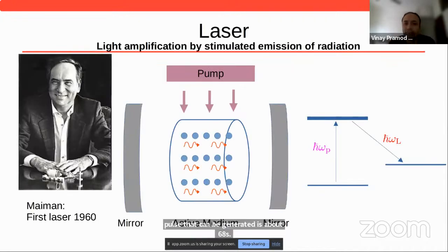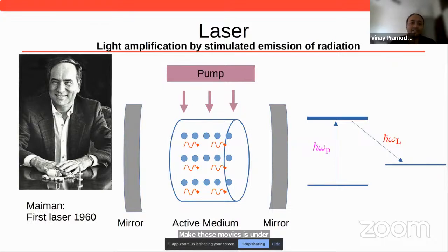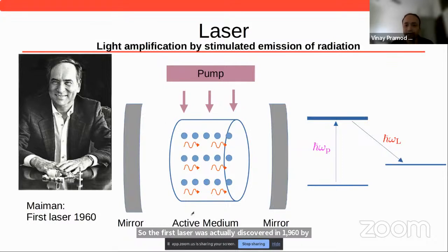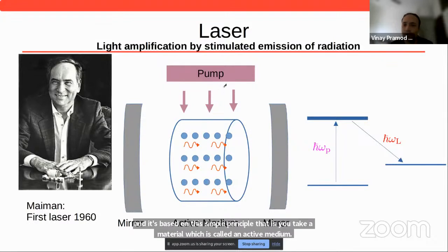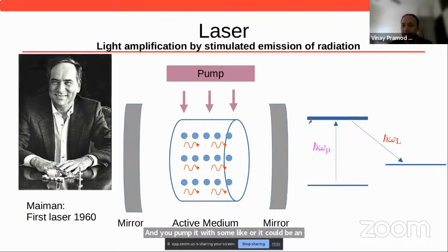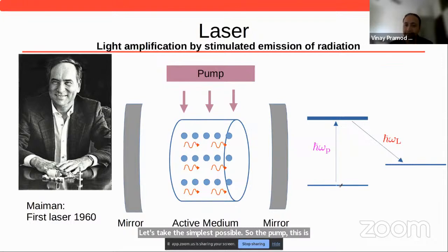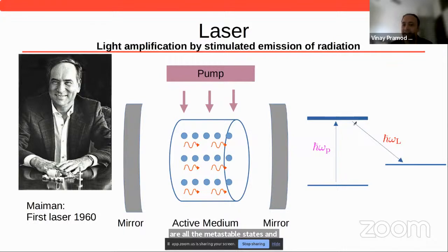Let's go back to basics. The first laser was discovered in 1960 by Maiman and it's based on this simple principle: you take a material called an active medium and pump it with some light or electric signal. This material can be modeled as a three-level system. The pump excites lots of atoms into an excited metastable state, and after a certain time they cannot remain in this excited state — they de-excite.